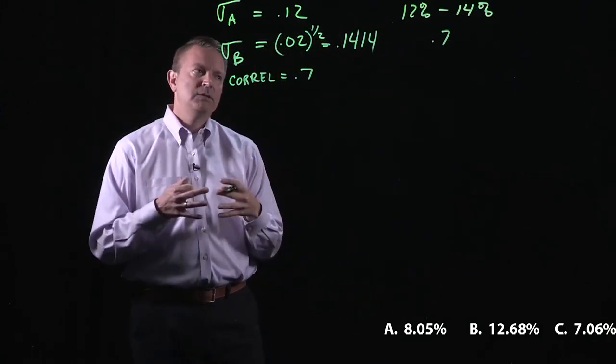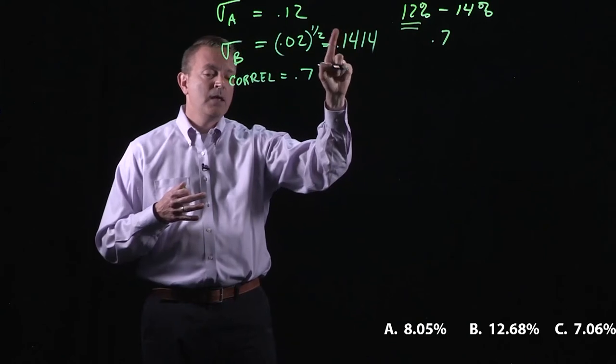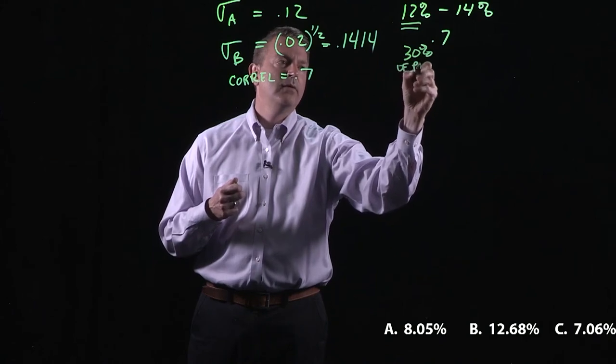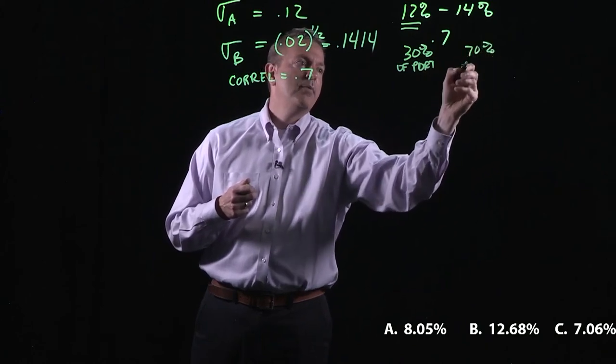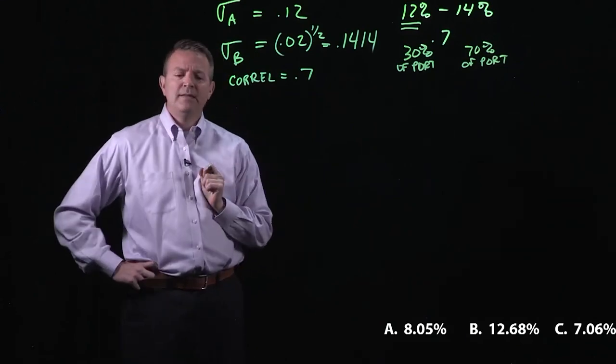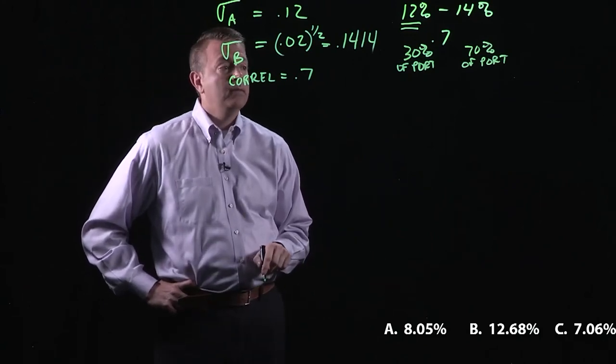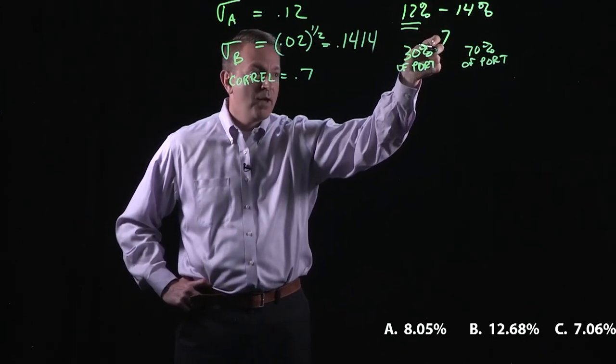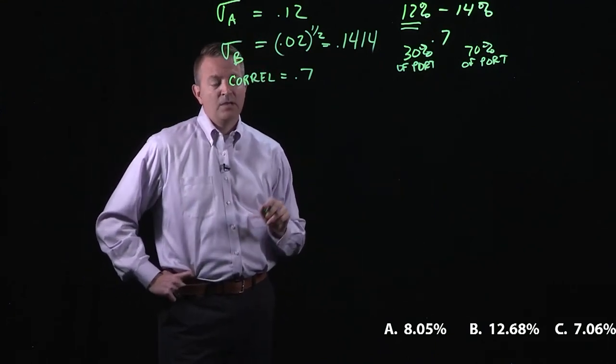I'm thinking if you put these two together, you're probably a little closer to that 12%. Now remember, whenever we're looking at the 12%, we have 30% of the portfolio in this one. So we're actually weighting it a little bit closer to the 12. We got 70% of the portfolio over here, right? So if I was to take a guess without even doing any calculations, I would probably say that 12.68 actually looks pretty good. Because how can I take these relatively volatile stocks, relatively highly correlated, and get it down to 7% or 8%? That's kind of a stretch.